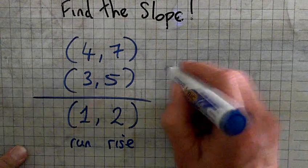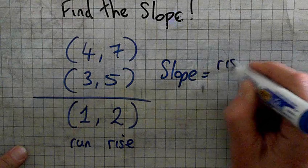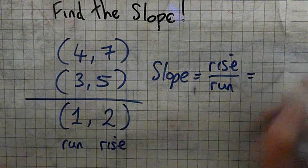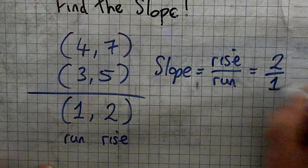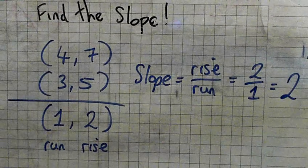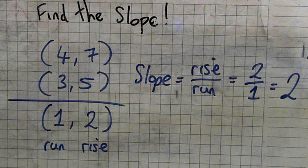Now write down your formula. Slope is equal to the rise over the run. Now the rise was 2, wasn't it? 2 over 1 is equal to the rise over the run. So the slope is 2.